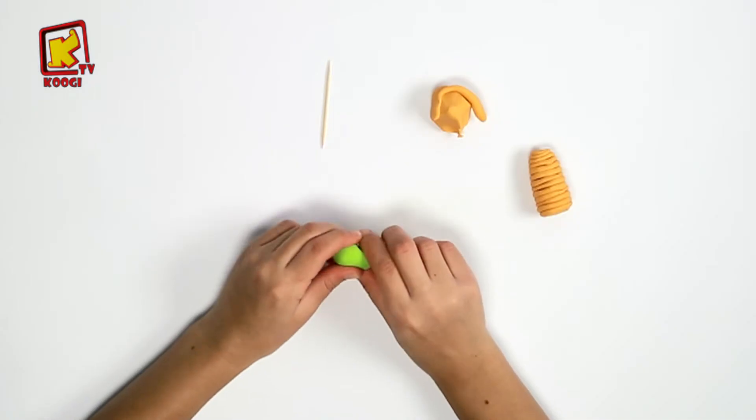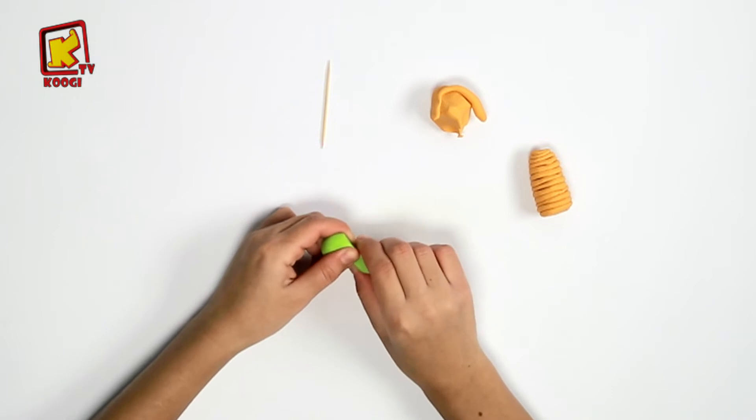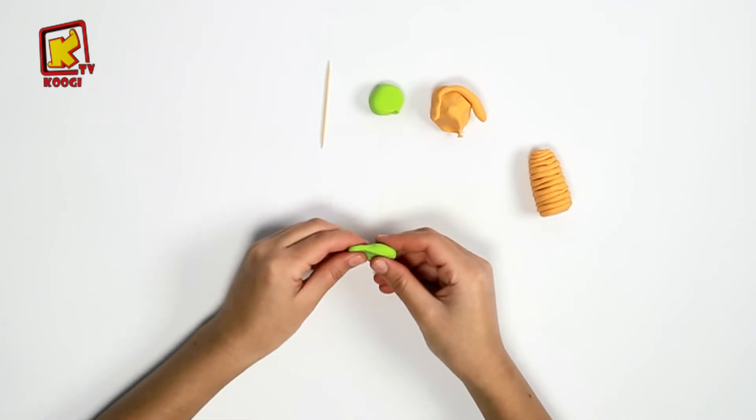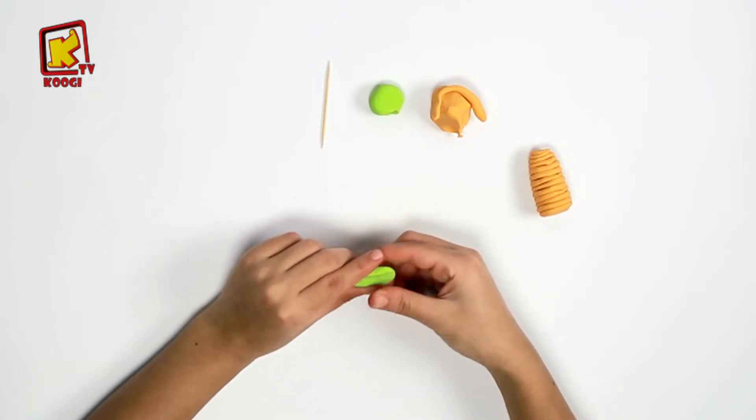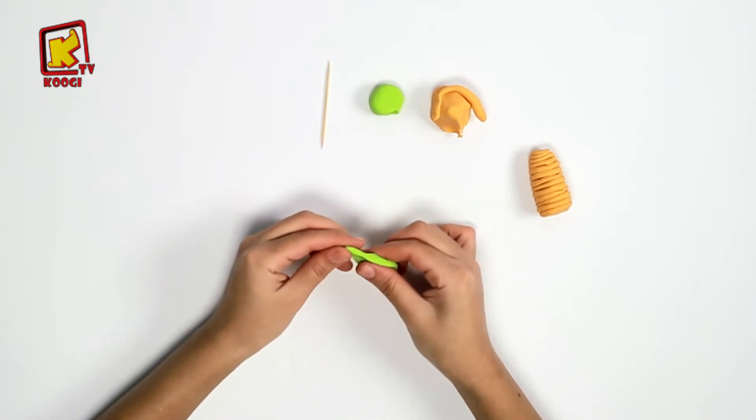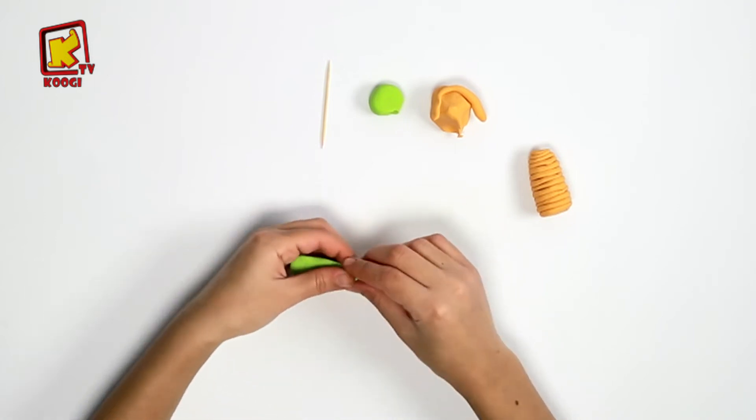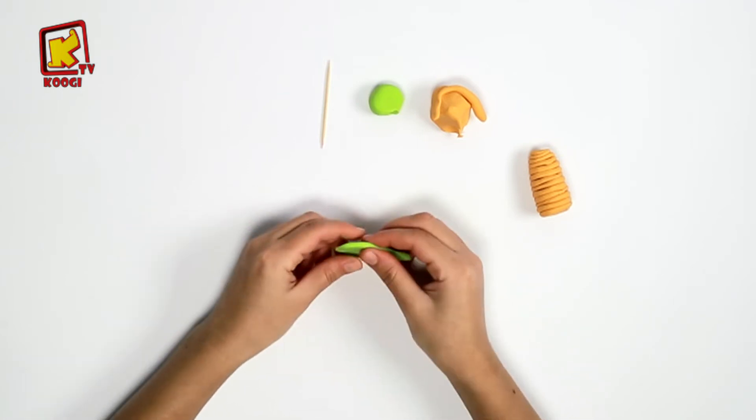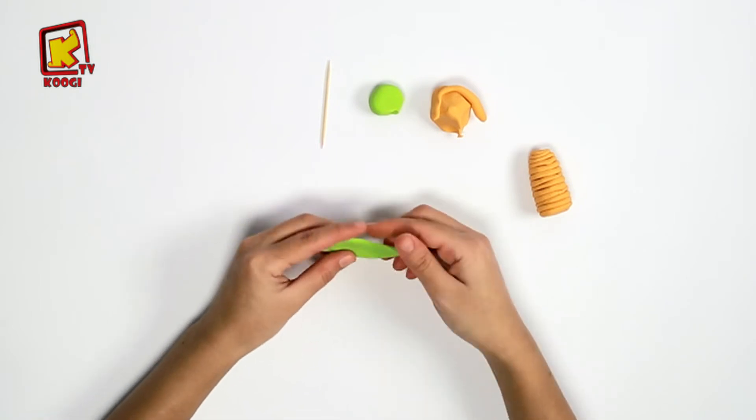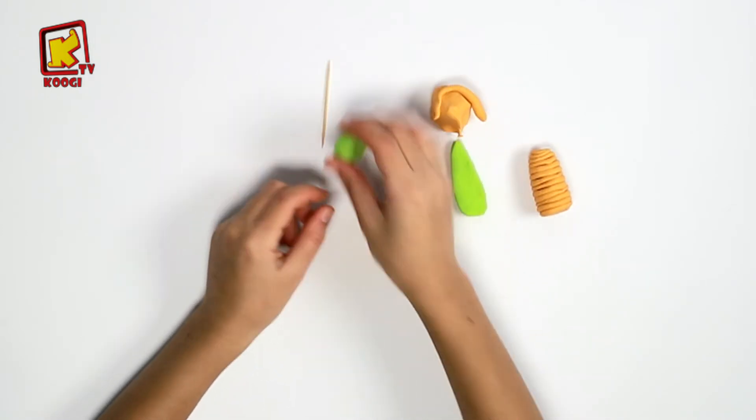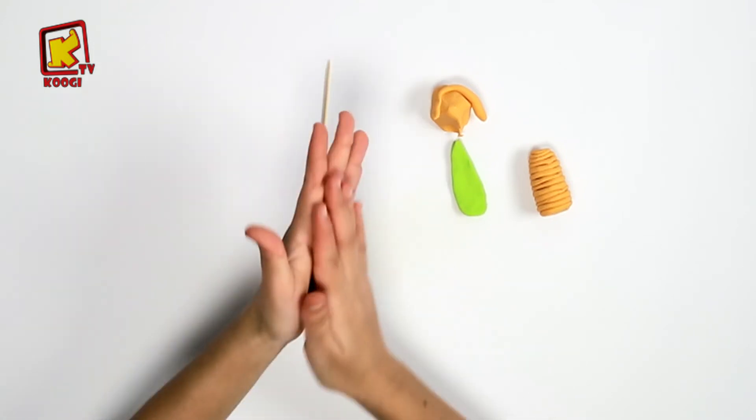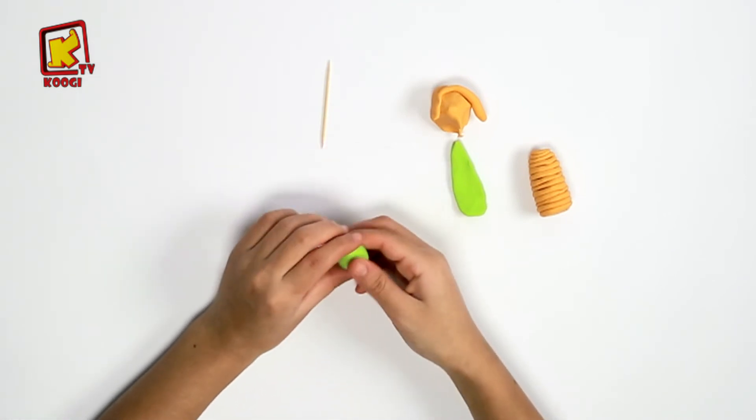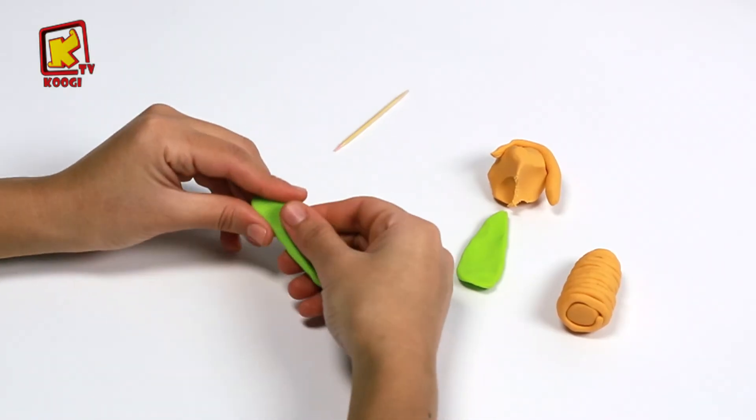Et avec l'argile vert, on va rouler et le moduler pour faire les feuilles de maïs. Je vous laissez voir les feuilles de maïs.